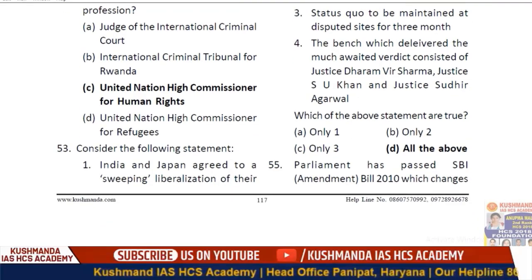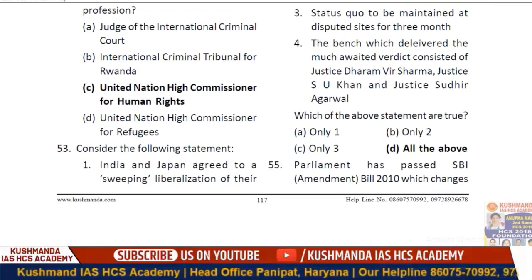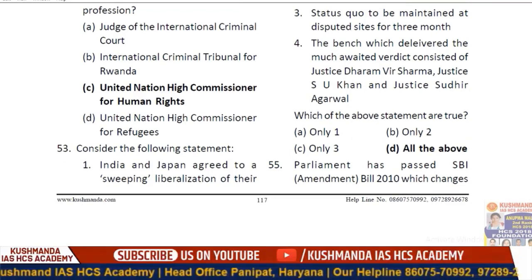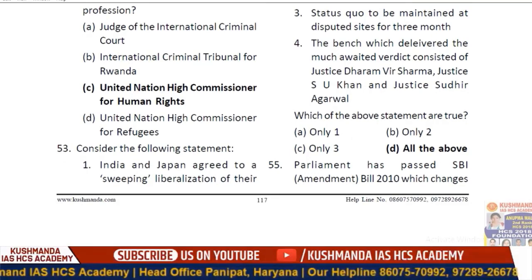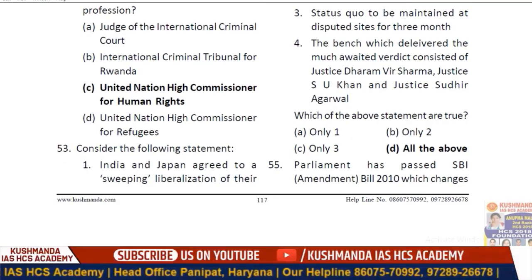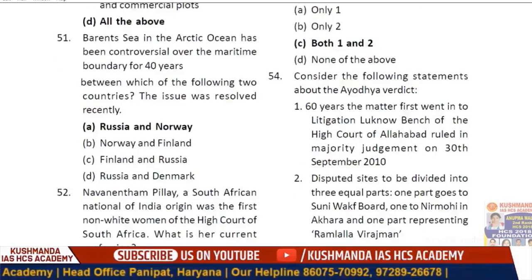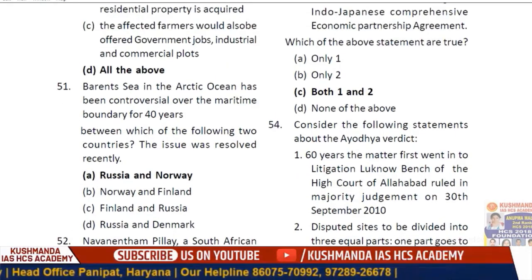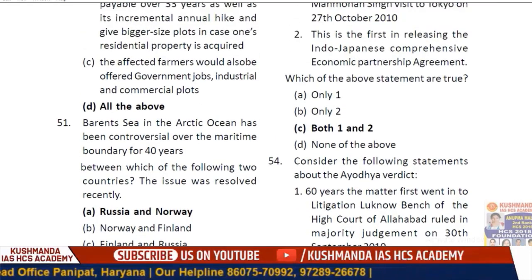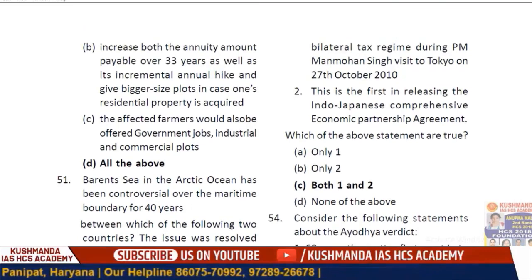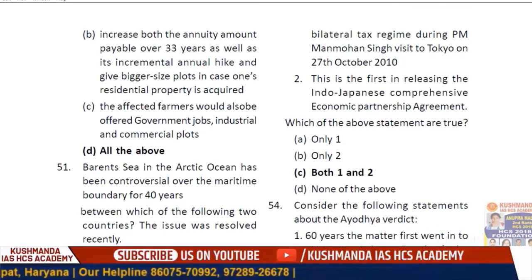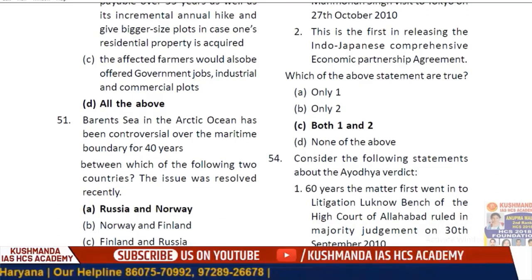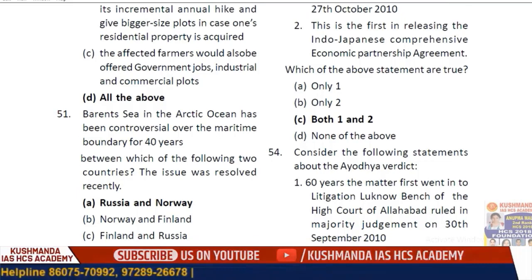Question 53: Consider the following statements — India and Japan agreed to a sweeping liberalization of their trade relations. Both statements one and two are correct.